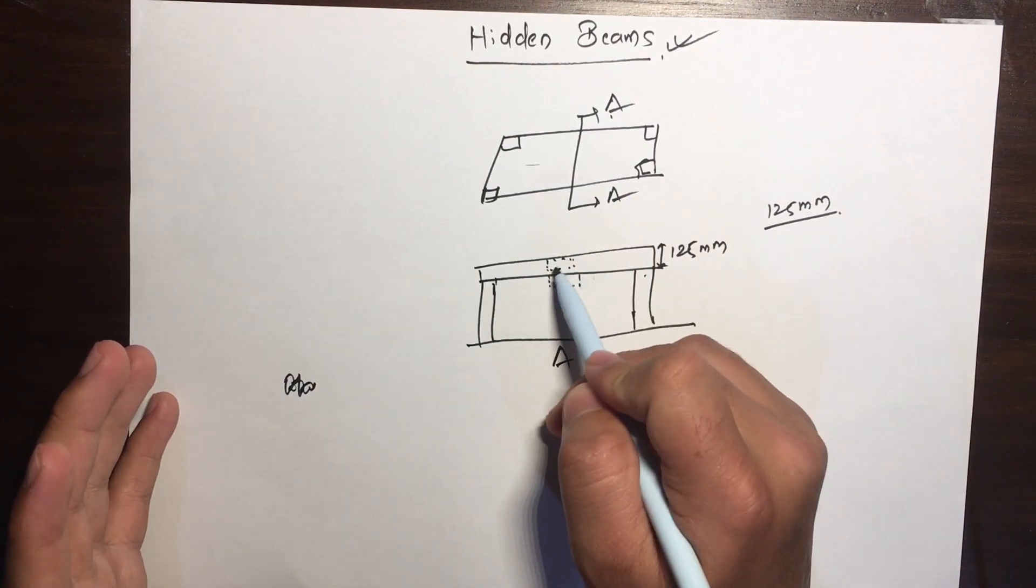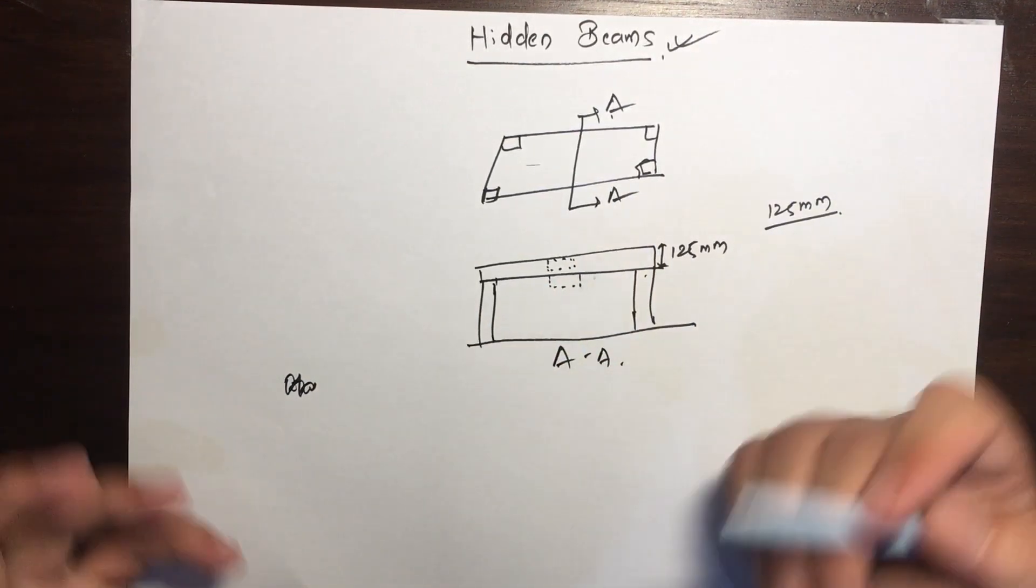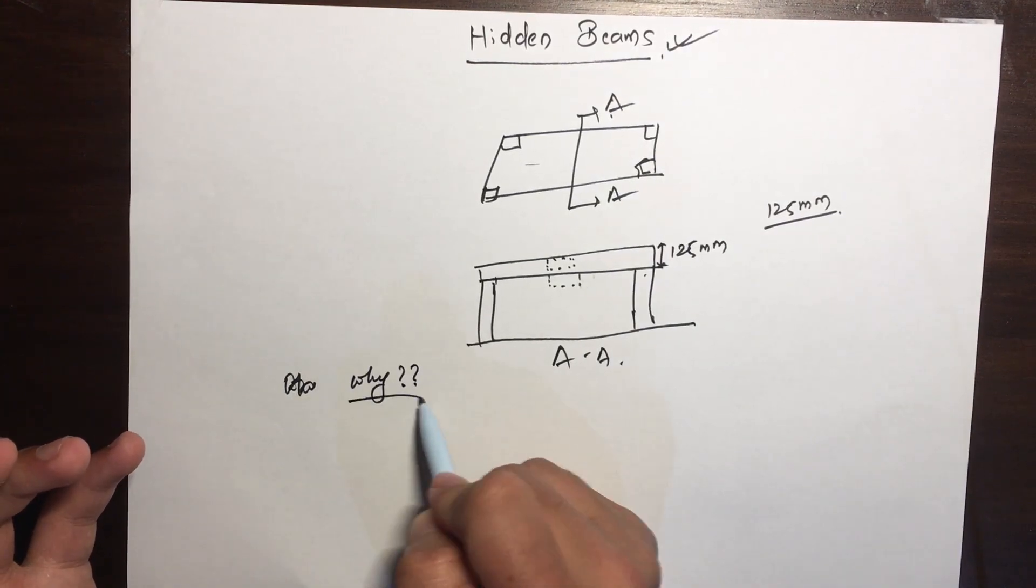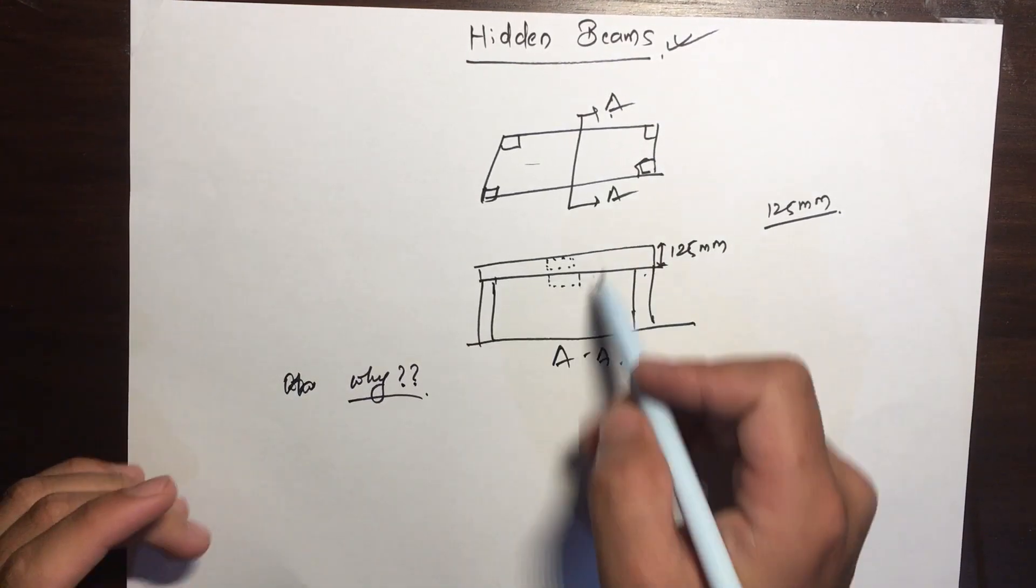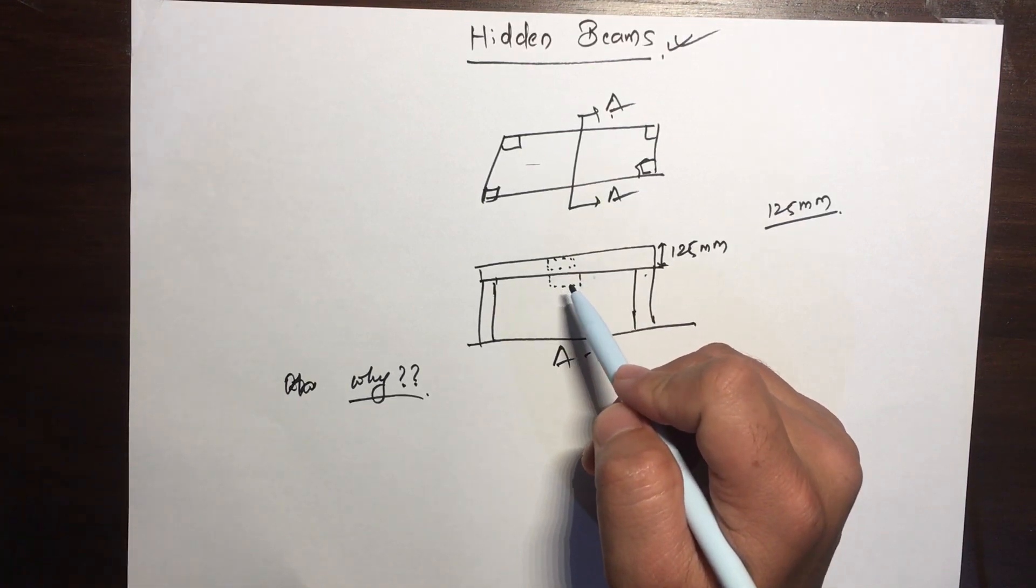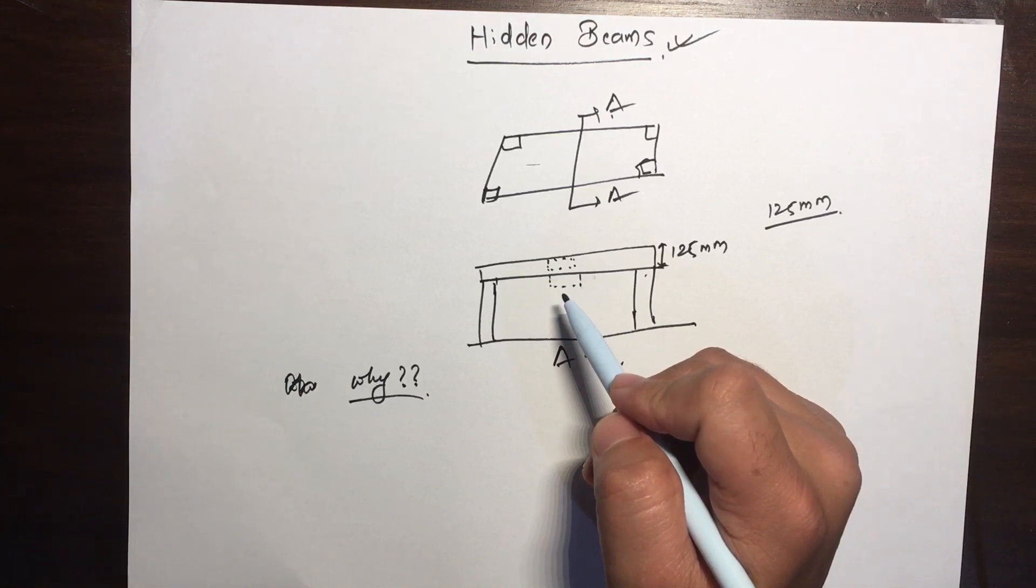So why do we need hidden beams? One answer I've already given you is the aesthetic point of view. You don't want your beams to be visible because beams look really ugly on the slab. Another purpose is to increase the height of the room.